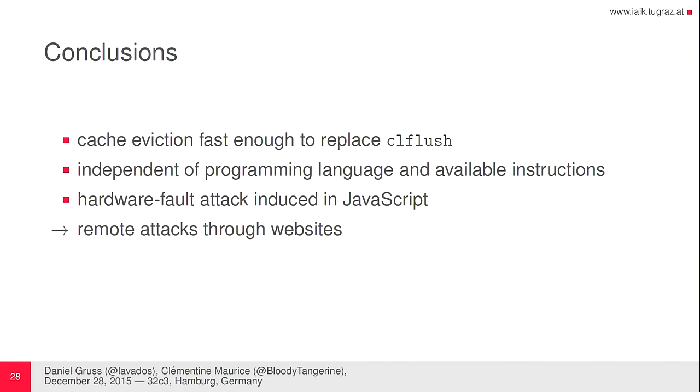For conclusions: cache eviction is fast enough to replace CLflush, and without CLflush our attack is independent of programming language and available instructions — we could even perform it on ARM smartphones. It's the first hardware fault attack in JavaScript and the first hardware fault attack performed through a remote website. Performing this through a website is particularly concerning: if only one percent of systems is affected but you run a website with one million users, that's still an awful lot of people affected. Look out for the Rowhammer.js JavaScript framework. Thank you.